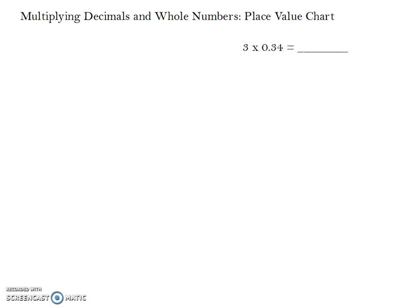Today we'll be talking about multiplying decimals and whole numbers using a place value chart. The problem that we're going to work with is 3 times 0.34 or 34 hundredths.